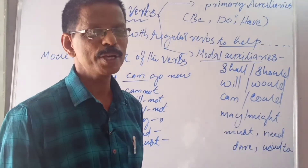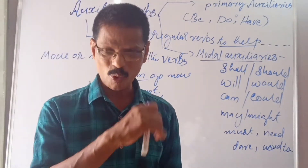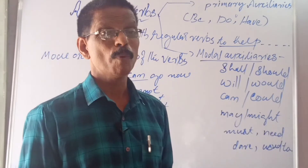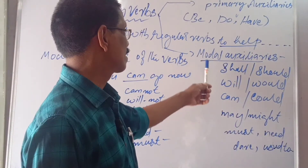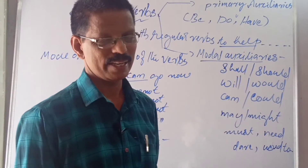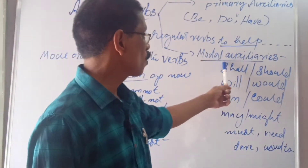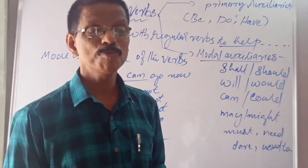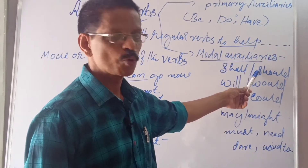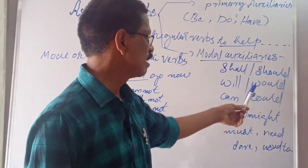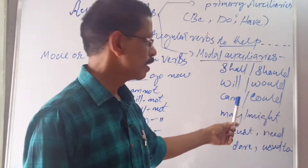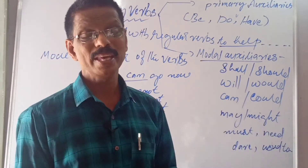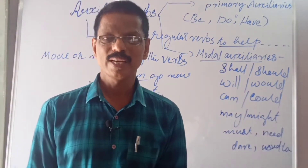Now we are coming to the most important part of our topic — that is modal auxiliaries. What are the main or chief modal auxiliaries? They are: shall, should, will, would, can, could, may, might, must, need, dare, used to. There are many. We will learn them slowly over time.